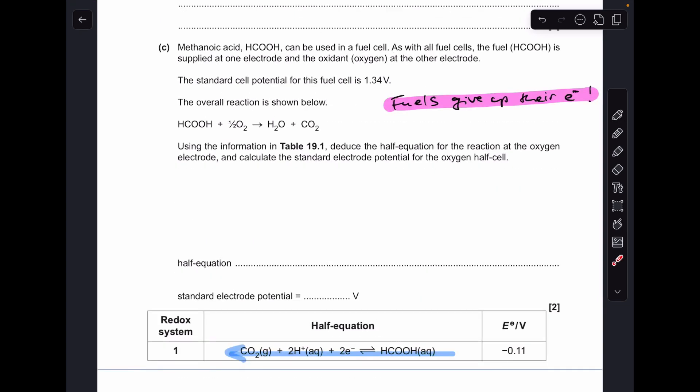And finishing off with part C, about this methanoic acid fuel cell. The first thing we need to say is that fuels always give up their electrons in fuel cells. So what that means is the redox system with the methanoic acid in, from the table, is going to move backwards. And the other thing we'll appreciate is the electrode potential is going to be the least positive of the two.